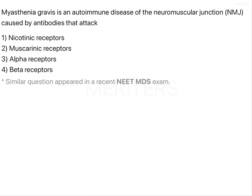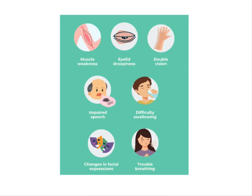It creates certain antibodies which bind to this junction and block their ability to receive the nerve impulse. This basically leads to weakness of your skeletal muscles, so your voluntary muscle functions are impaired. It mainly causes muscle weakness, drooping of your eyelids, double vision, affects your speech and facial expressions, and causes difficulty in swallowing and breathing as well.